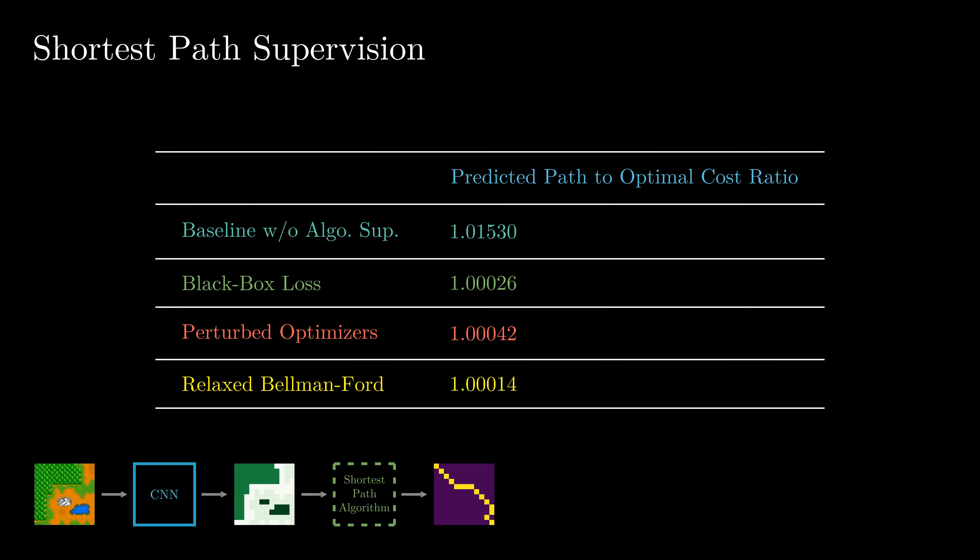For the results, we evaluate the ratio between the costs of the predicted shortest path and the cost of the ground truth shortest path, measured using the underlying hidden cost matrices of the test data.